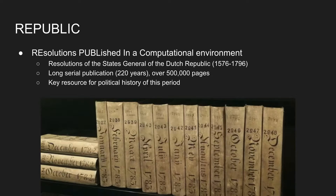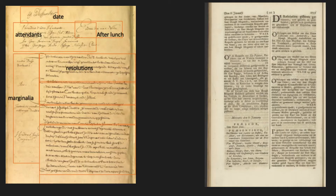The Resolutions of the States General is an archive that captures the decision-making process of the States General of the Dutch Republic in the period 1576 to 1796. It's a long serial publication of 220 years, which summarizes the daily meetings. There are about 60,000 meetings in total with over 1 million resolutions in over half a million pages of text. This is a key resource for research on political history of this period.